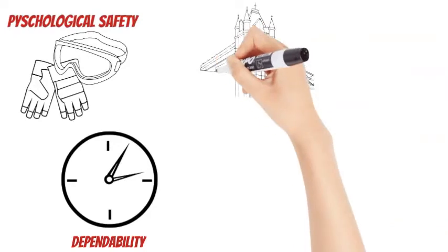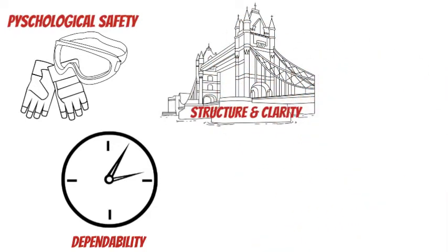Number three, structure and clarity. Team members have clear roles, plans and goals.